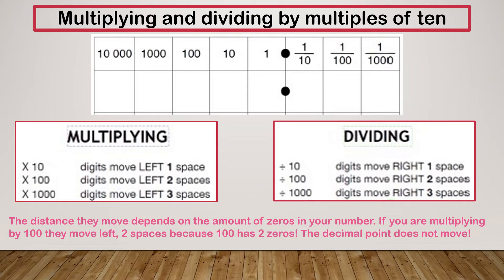And dividing is the opposite of that. The distance they move depends on the amount of zeros in the number. So 10 has 1 zero and it's moving 1 space. 100 has 2 zeros and it's moving 2 spaces. And 1000 has 3 zeros and it's moving 3 spaces.